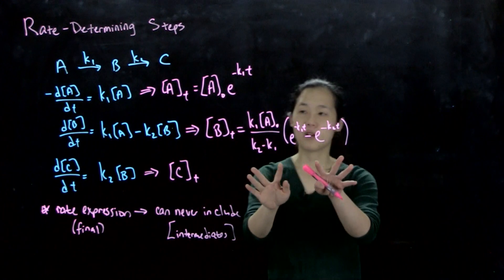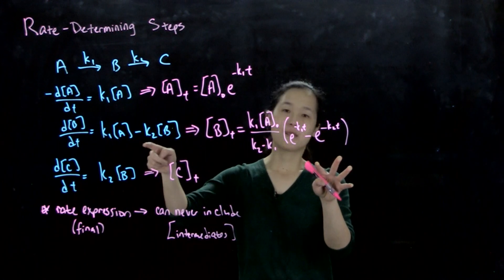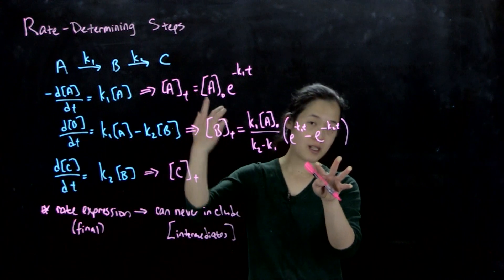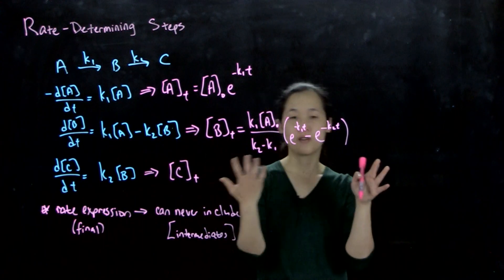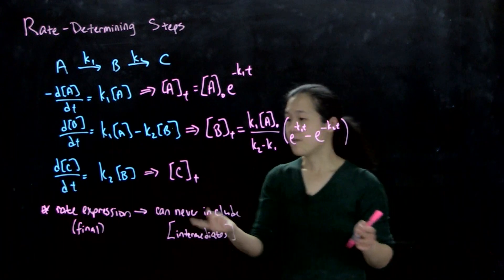So keep that in mind. That's why here, we didn't just solve A0 e^(-k1t) - B0 e^(-k2t), right? Because we don't have an initial B0. We don't know it. So it's not very useful for you if you're doing math.